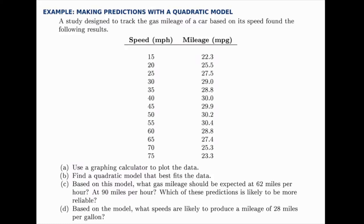In this example we'll build a quadratic model to fit data and then make predictions based on that model. We're going to take data that tracks the gas mileage of a car based on its speed. In the first column we have speed given in miles per hour, in the second column we have mileage given in miles per gallon. We're going to compare these two, considering speed to be the x variable and mileage to be y, assuming that gas mileage depends on speed rather than the other way around.